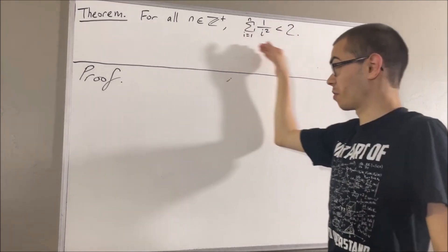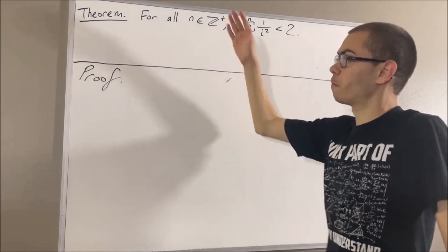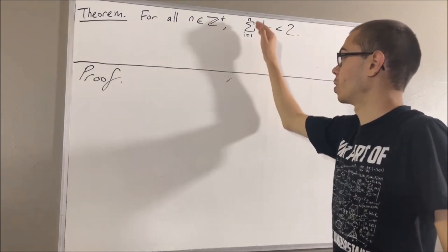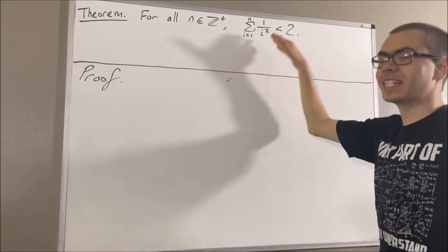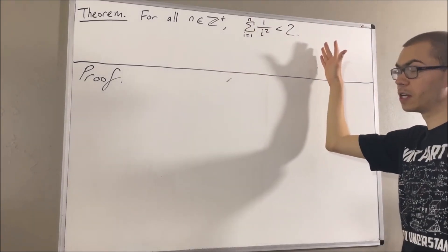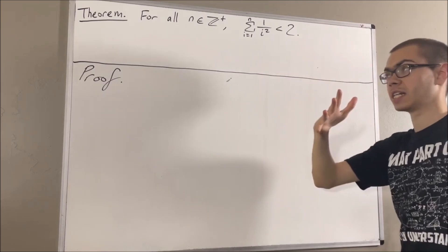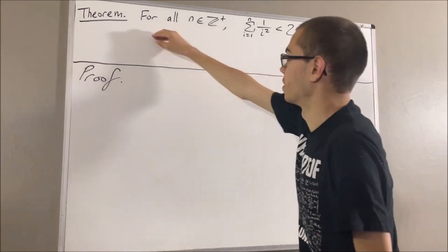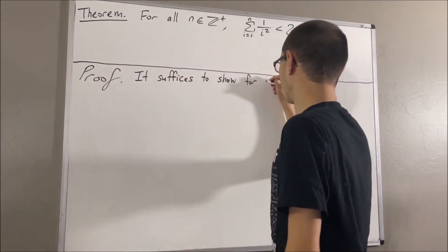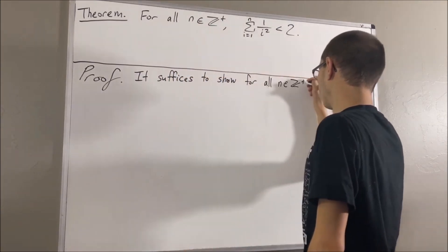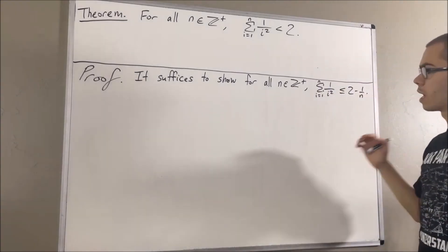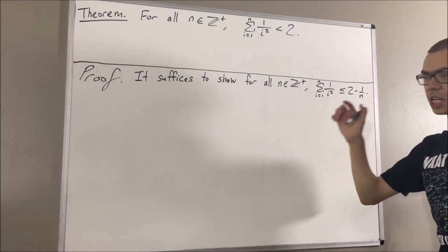Now, to prove this theorem, we are actually going to prove for all positive integers n, the sum from i equals 1 to n of 1 over i squared is less than or equal to 2 minus 1 over n. If we can prove that, then that proves that this must be true. And we're going to show that this is true using induction.